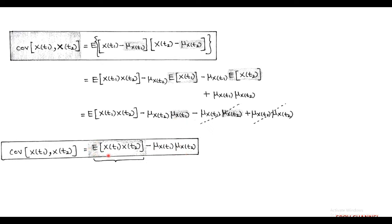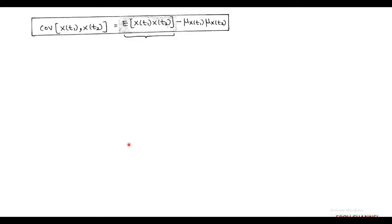In this expression of covariance, the first term on the right side defines the autocorrelation of two random processes. So the covariance can be obtained using the autocorrelation function.